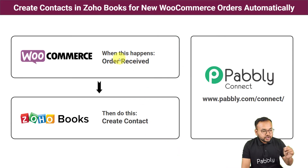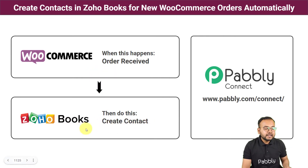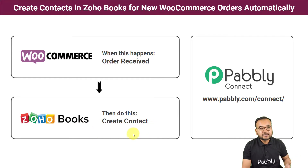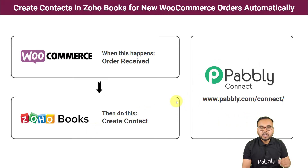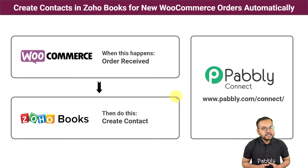The flow of this automation is going to work like this: as and when you receive an order from your WooCommerce store, a contact will be created in Zoho Books automatically. The person who made the order is going to be added as a contact in Zoho Books automatically. To make this happen we are using Pabbly Connect, which is an integration and automation tool, and the best part is you will not require any coding skills or programming knowledge.